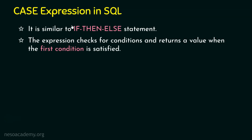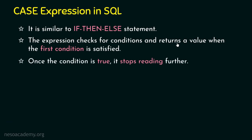The case expression checks for the condition. If the first condition is true then that value is returned, else it will move on to the second condition. Once the condition is true it stops reading further. Let's assume there are 10 conditions. If the fourth condition is met, it would have obviously checked conditions 1, 2, and 3. If condition 4 is true it stops reading further — it won't proceed with conditions 5, 6, and so on till condition 10.